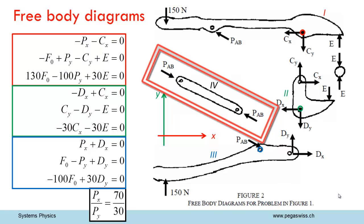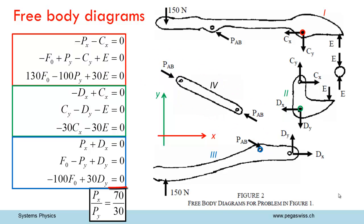The fourth body is a stabilizer link. A stabilizer link is hinged at both ends. This is why the force must act in the direction of the stabilizer link. The ratio between the two force components therefore equals the ratio between the corresponding lengths of the stabilizer link, which is 70 to 30.